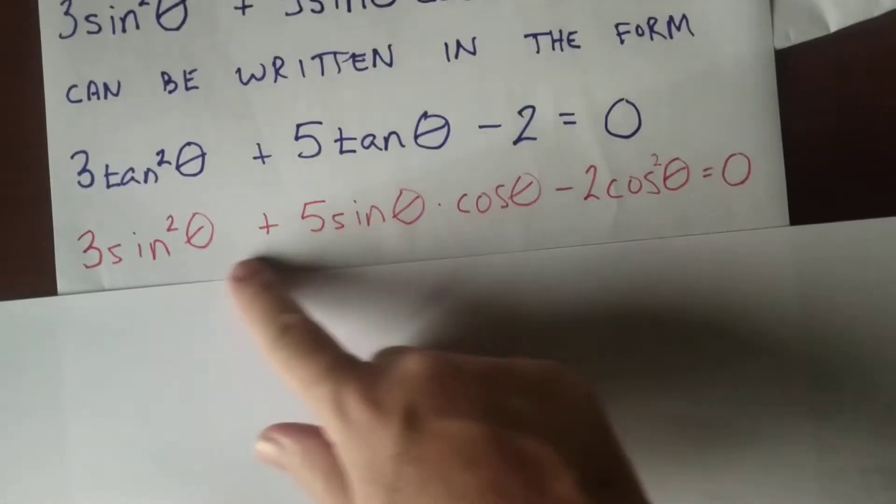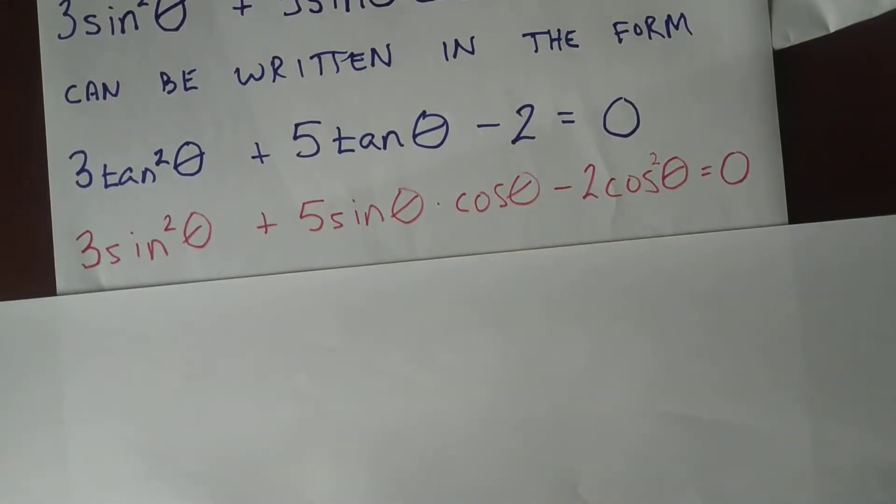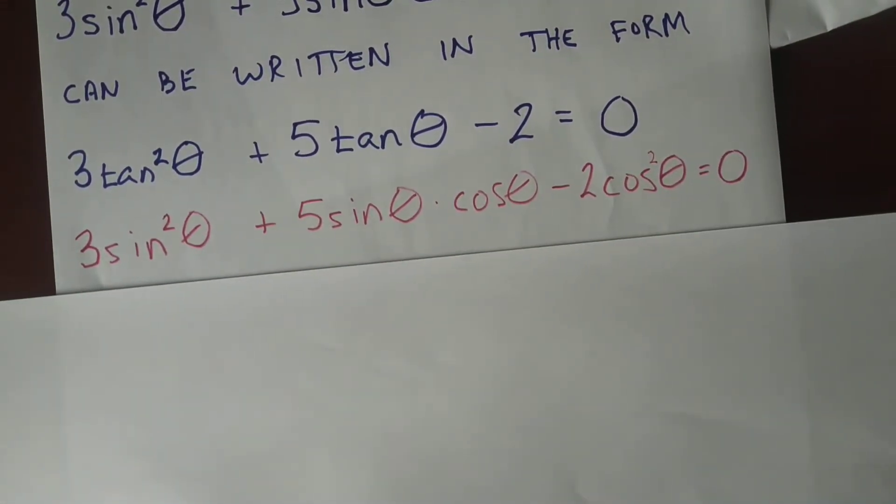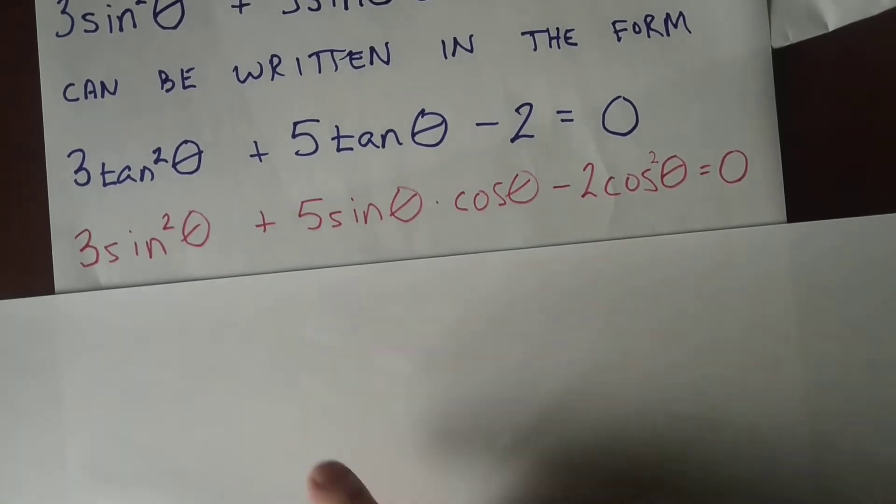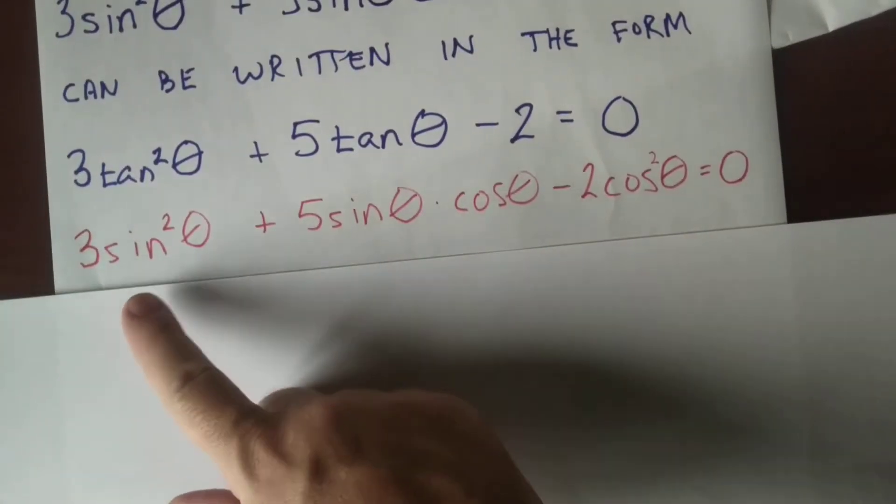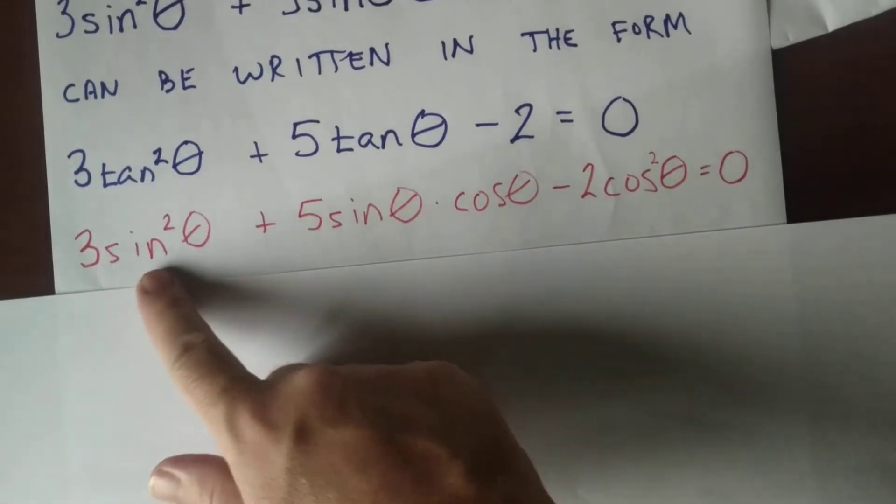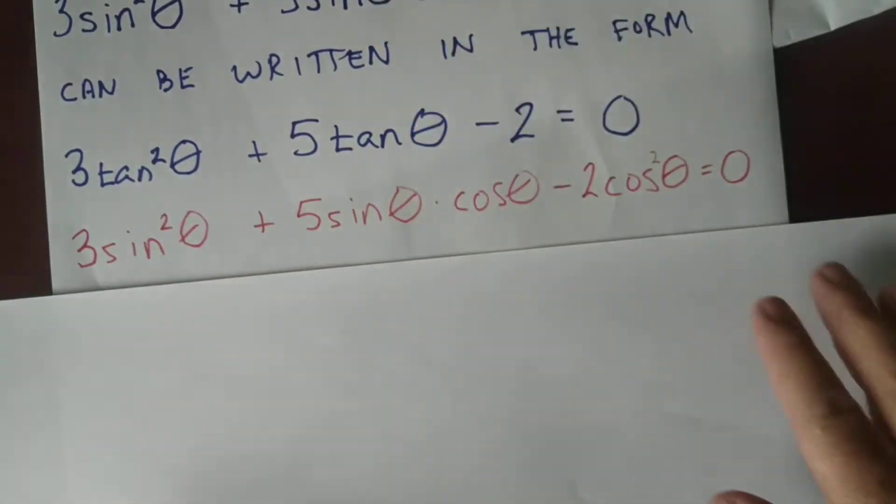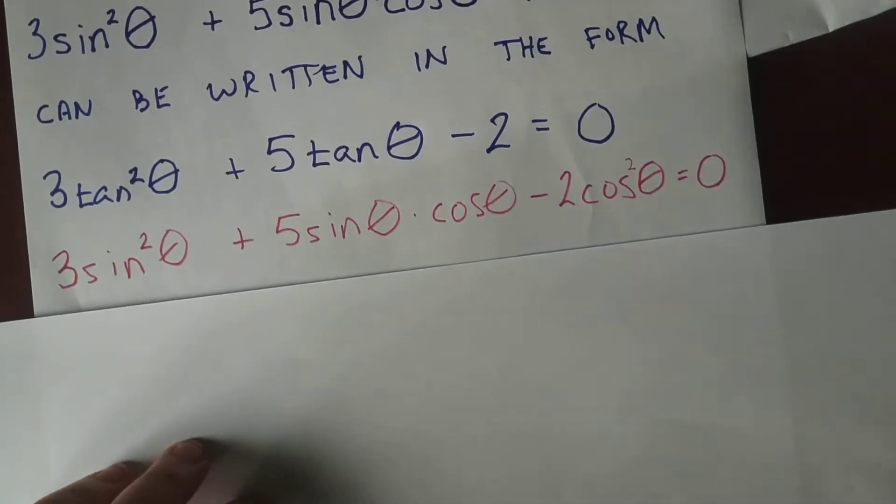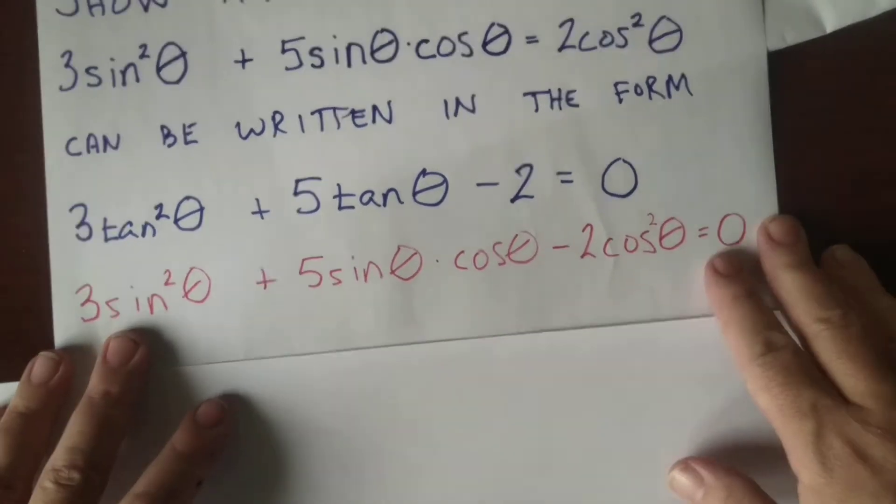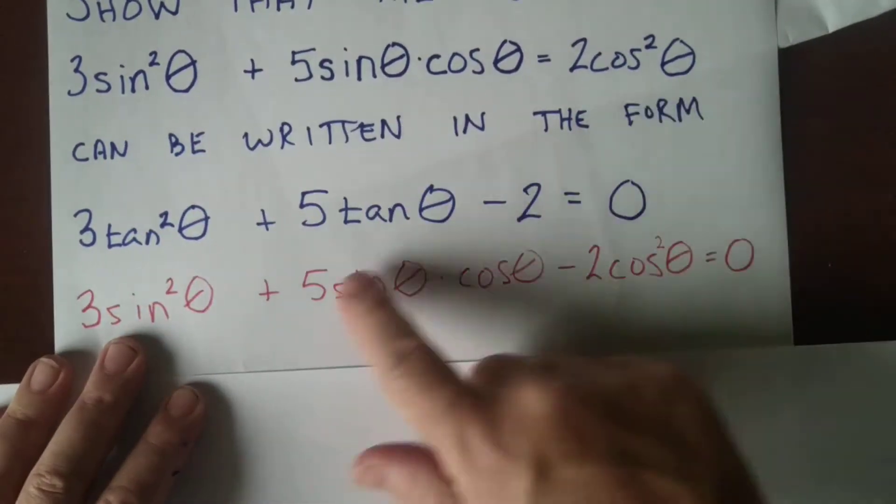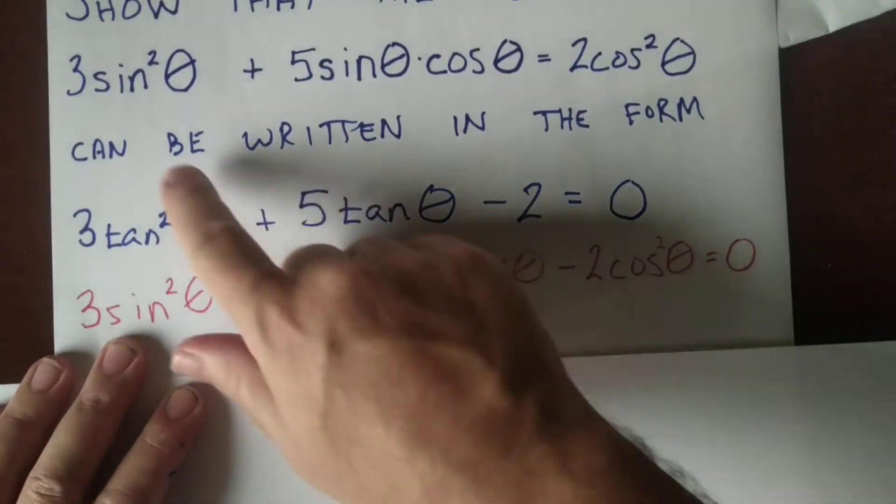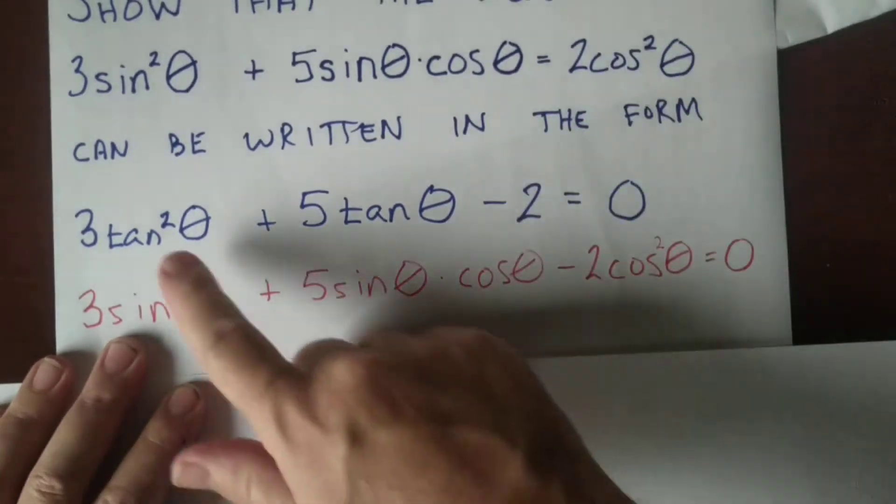So I wrote the next step in red. Bear in mind that sine over cosine is equal to tangent. And here they want us to go from point A to point B. They want us to go from this to tangent.